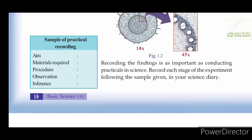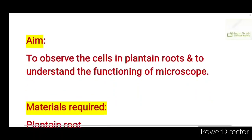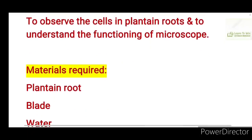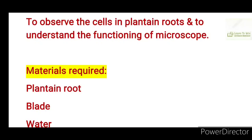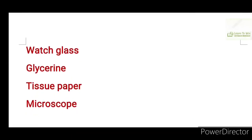If you have a sample for practical recording, the format is: AIM, Materials Required, Procedure, Observation, and Inference. The AIM is to observe the cells in the Plainian Root and to understand the functioning of the microscope — observing Plainian root cells and their workings. Materials Required: Plainian Root, Blade, Vellum, Petri Dish, Slide, Stain, Brush, Needle, Cover Glass, Watch Glass, Glycerin, Tissue Paper, and Microscope.